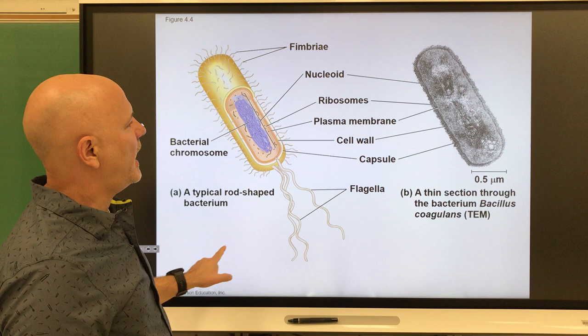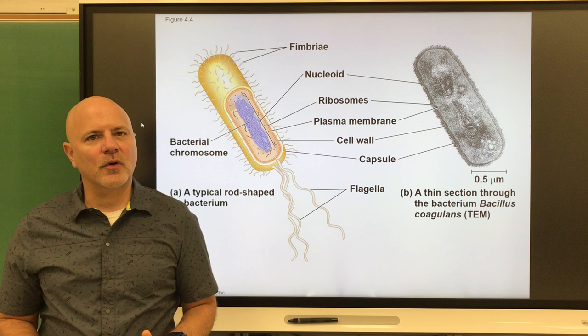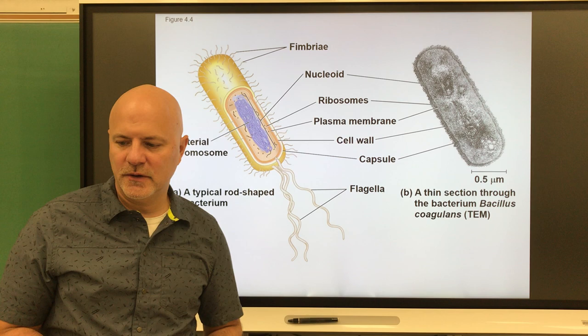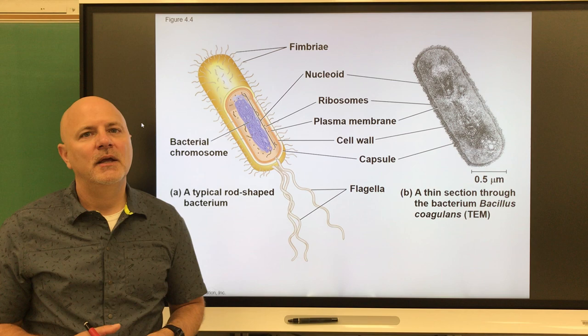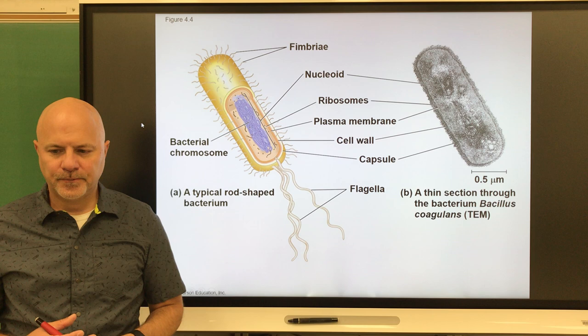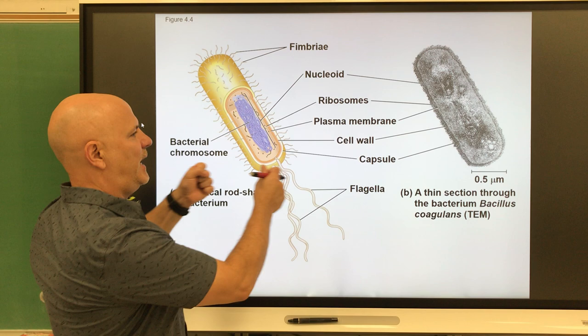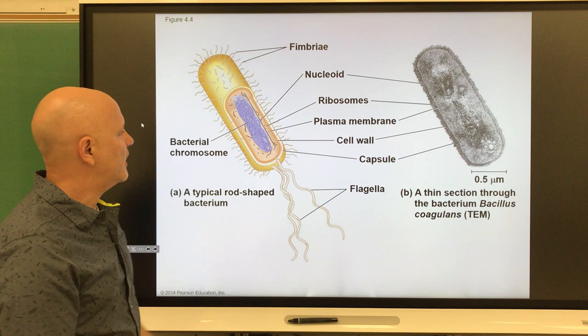Now let's look at prokaryotic cells — cells that lack a nucleus. These include bacteria and archaea, which are all unicellular and mostly range from 1 to 10 micrometers in size. The first structure is the nucleoid region — the area of a prokaryotic cell that contains the DNA. There is only one chromosome, and it's arranged in a circular loop — though it may look tangled, if spread out it would form a large loop.